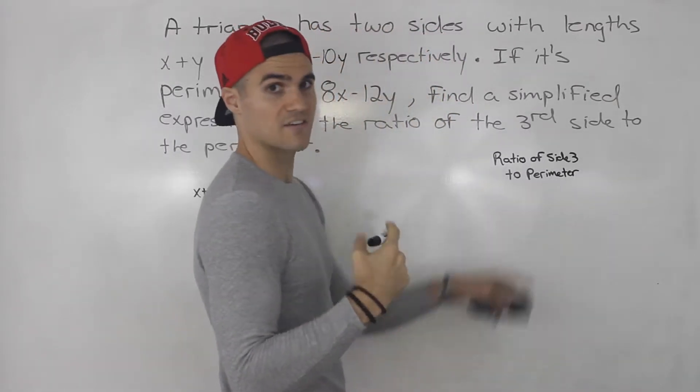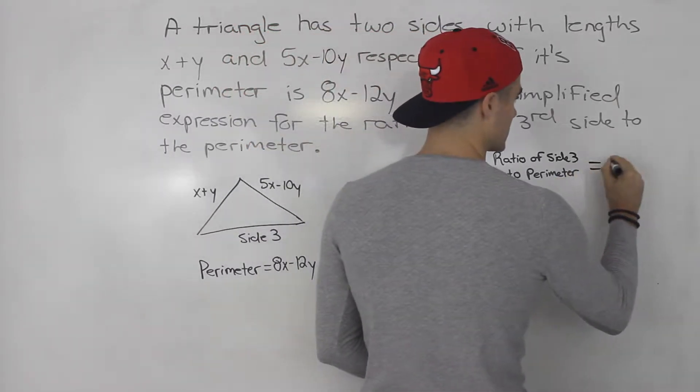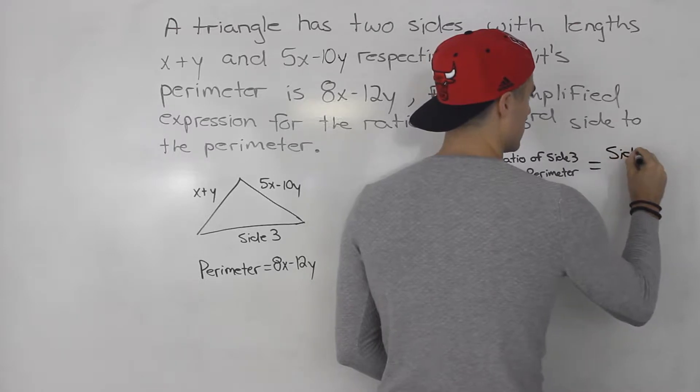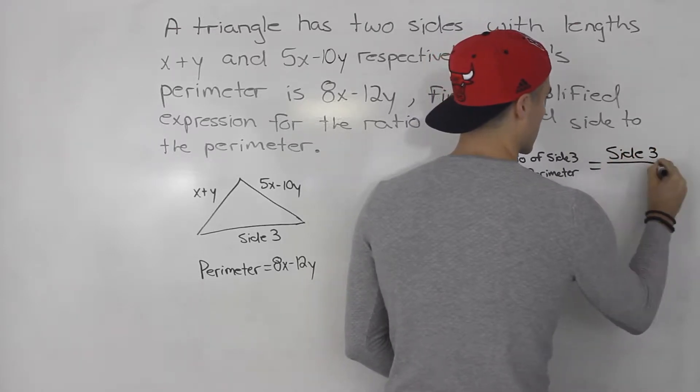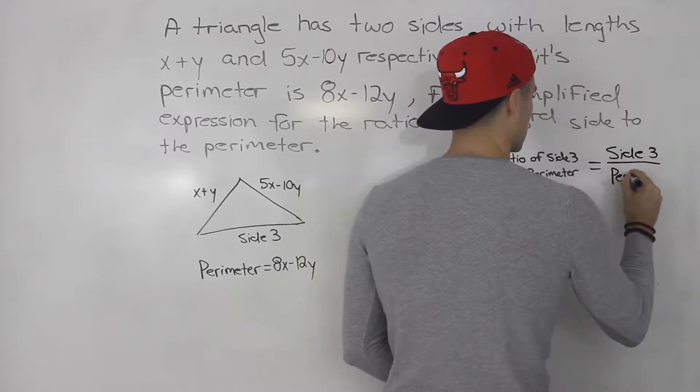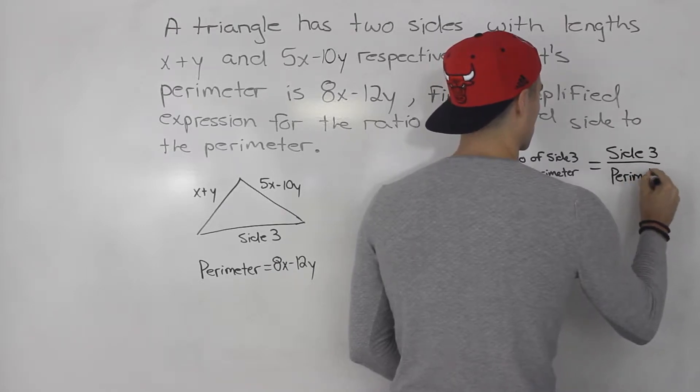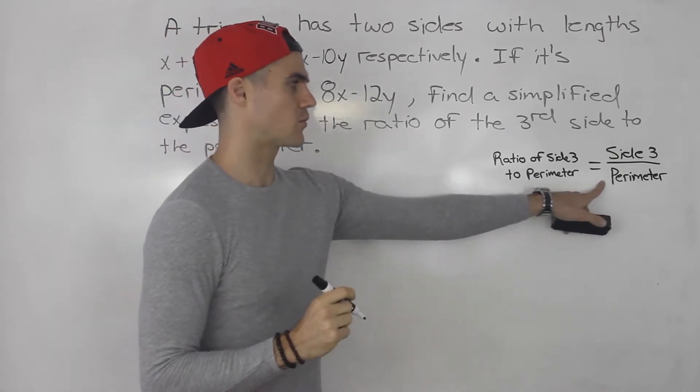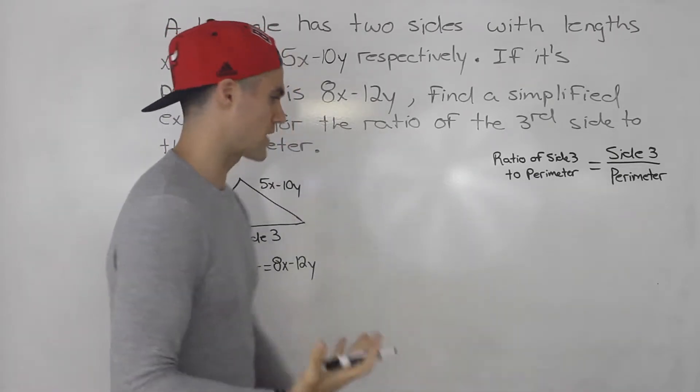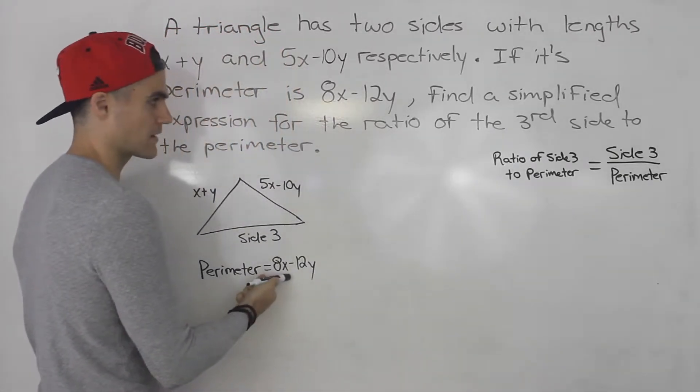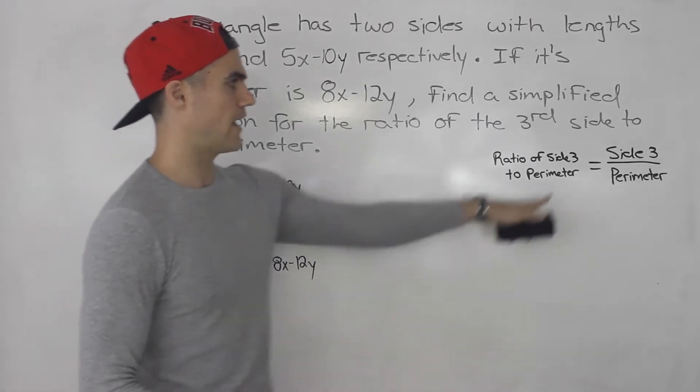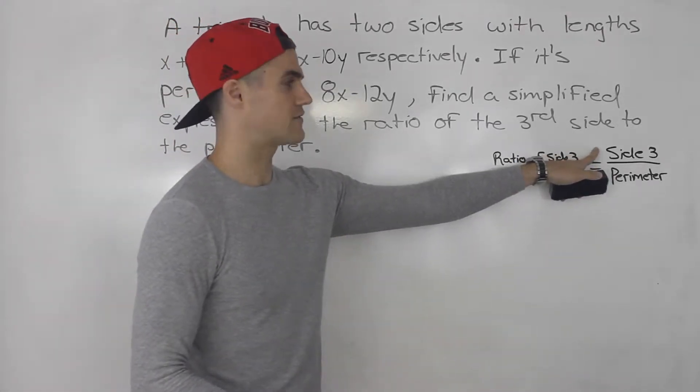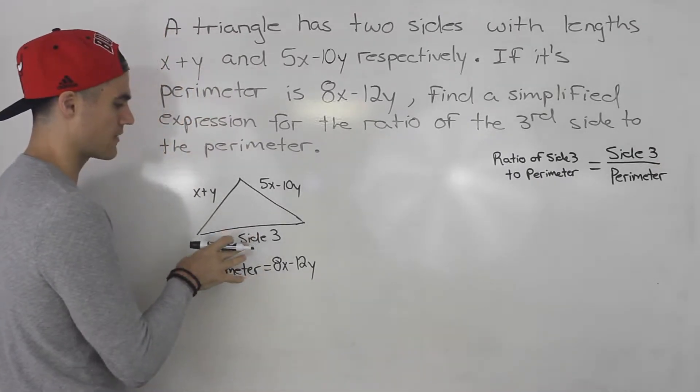Well, we could show that as a fraction. So we could take the length of side 3 and put it over the perimeter. Notice for this fraction here, we already have the perimeter, so we have the denominator, that's 8x minus 12y. But we don't have the third side. We don't have side 3, we don't have that length, so we're going to have to find that.